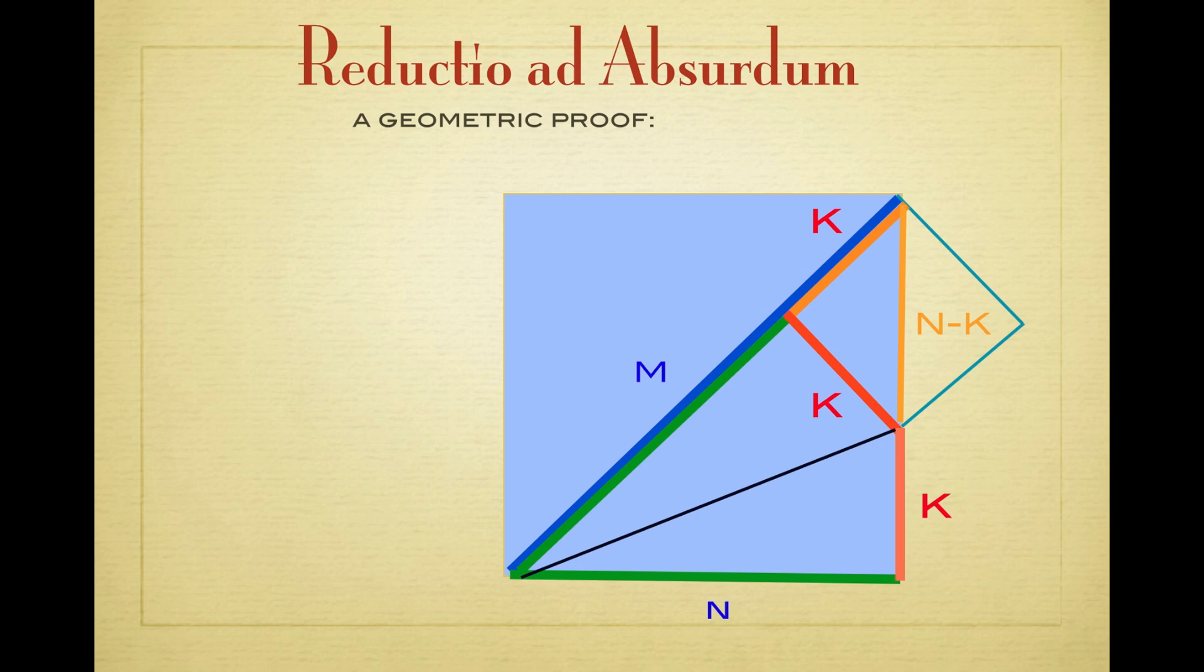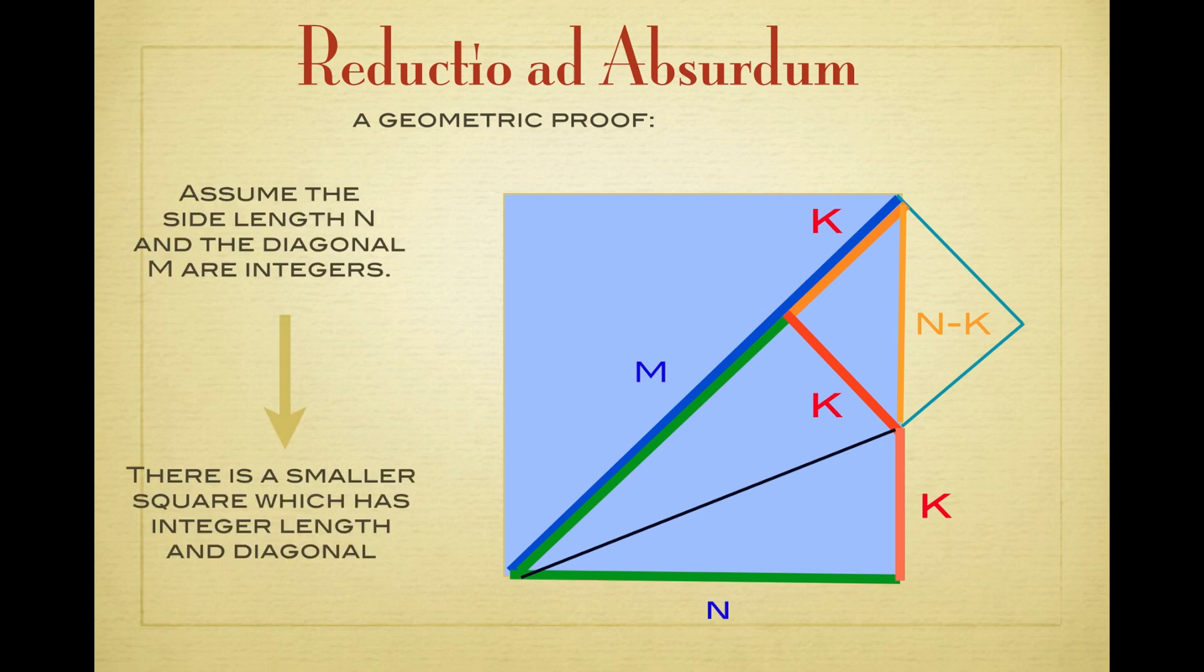So what we have achieved, we have started with a square which has integer side length and integer diagonal length, and we have obtained a smaller square which still has integer side length and integer diagonal length.